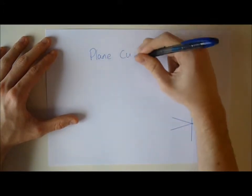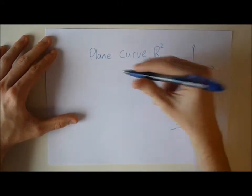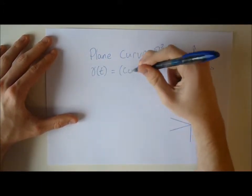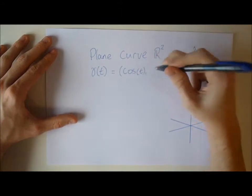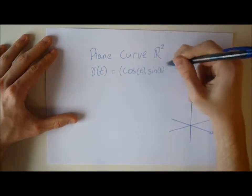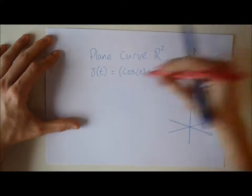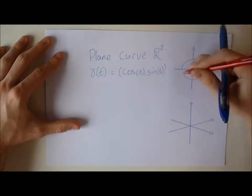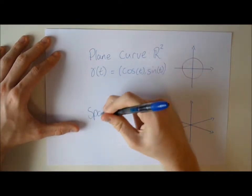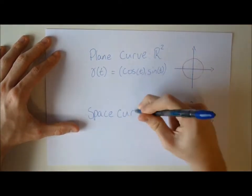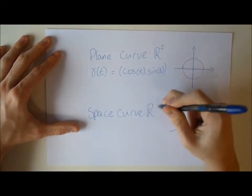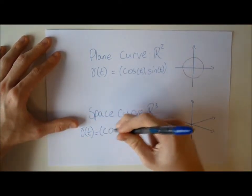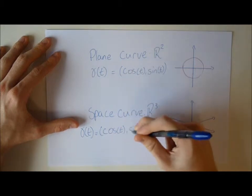A plane curve is in R^2. For example, gamma = (cos t, sin t). On the other hand, a space curve is in R^3. An example of this is gamma = (cos t, sin t, t).